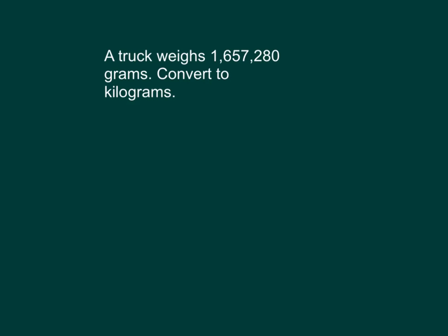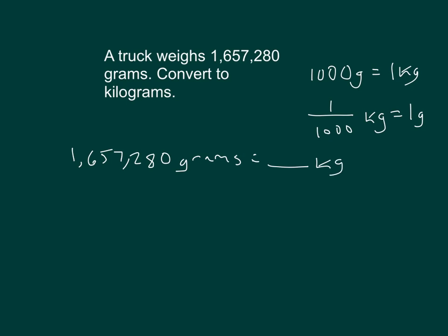A truck weighs 1,657,280 grams. Convert to kilograms. I know that 1,000 grams equals 1 kilogram. This also means that 1/1000 of a kilogram equals 1 gram. And then I can show my work converting from a smaller unit to a larger unit. So that's equal to 1,657,280 times 1 gram.